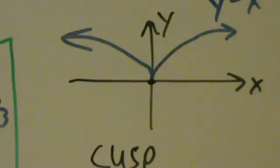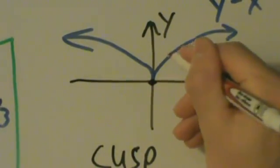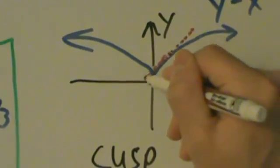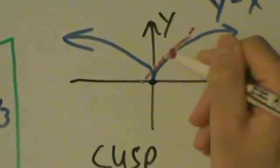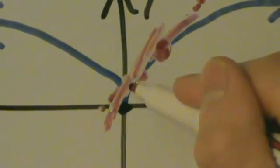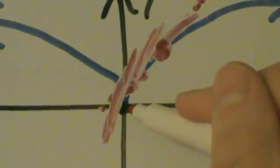Think about what would happen if we imagined a tangent line at x = 0. If you pick a tangent line slightly to the right of zero, it has some slope. But as we move closer and closer to the origin, the tangent lines get steeper and steeper, until eventually when we're at x = 0, the tangent line is essentially vertical. That's why at a cusp there's no derivative — the derivative is undefined at a cusp.